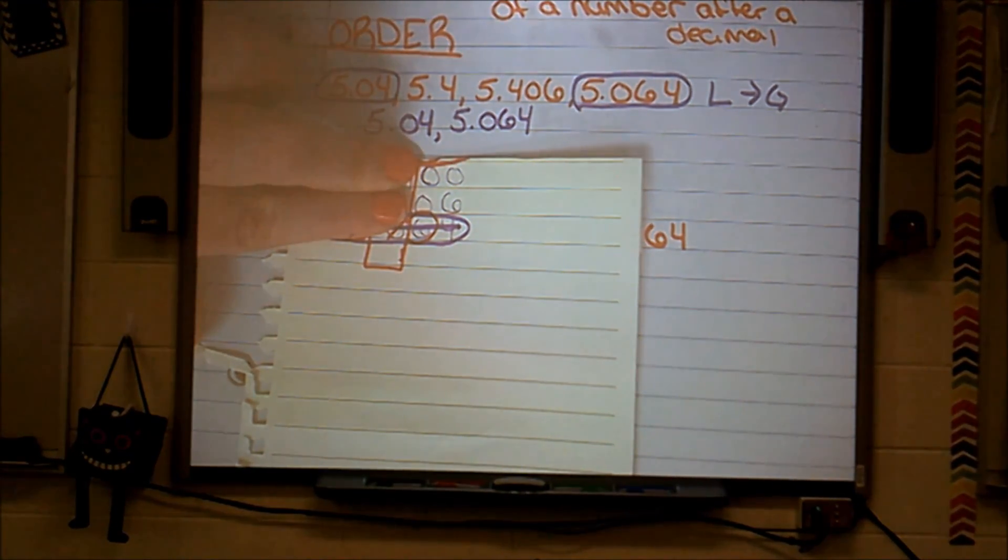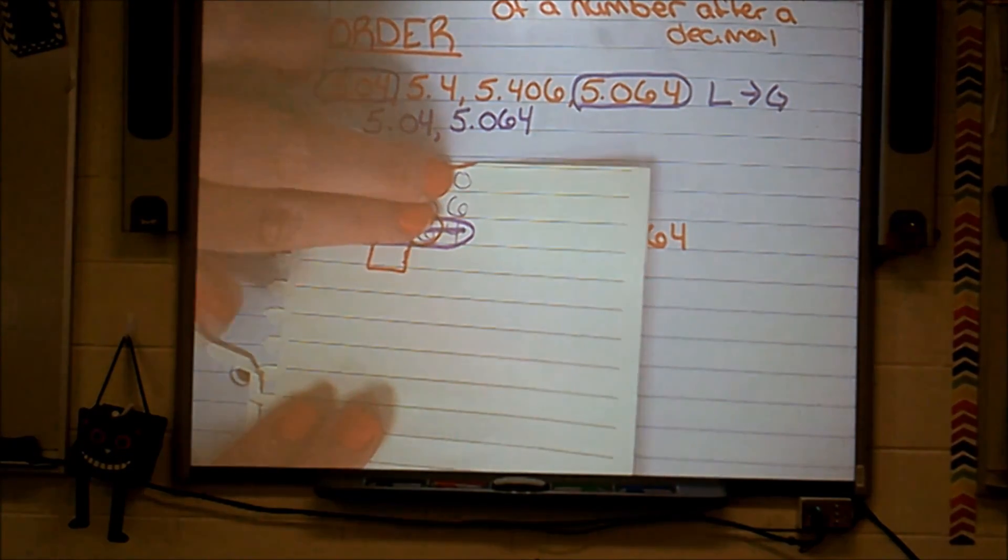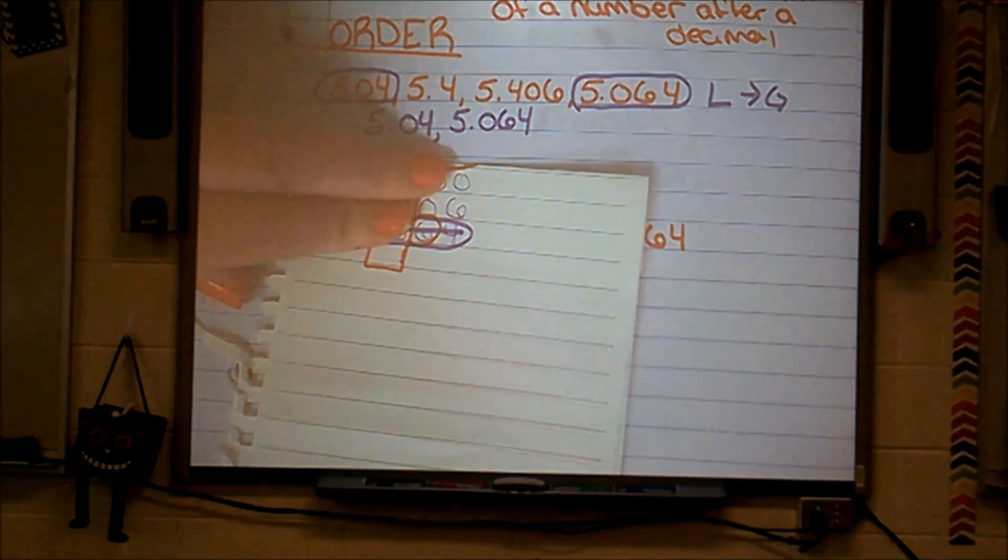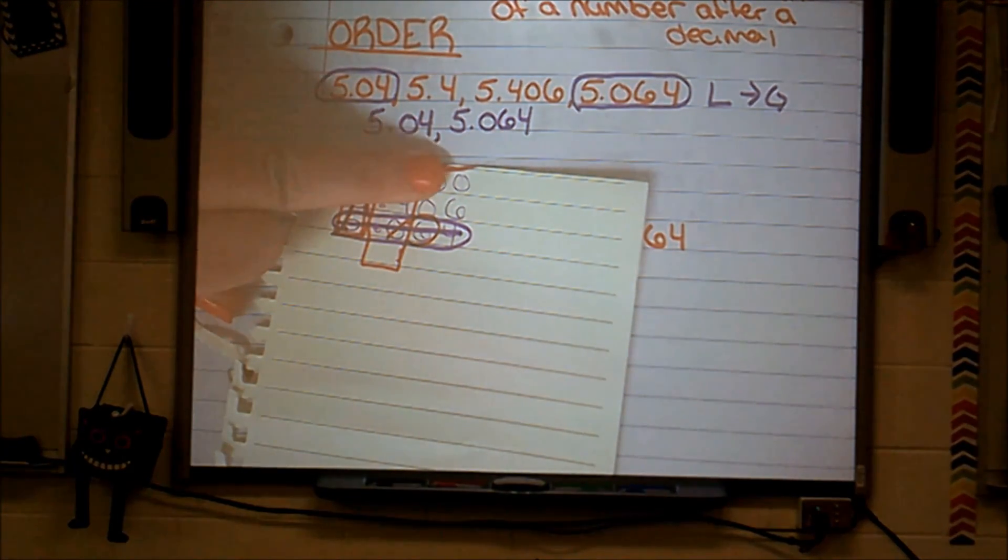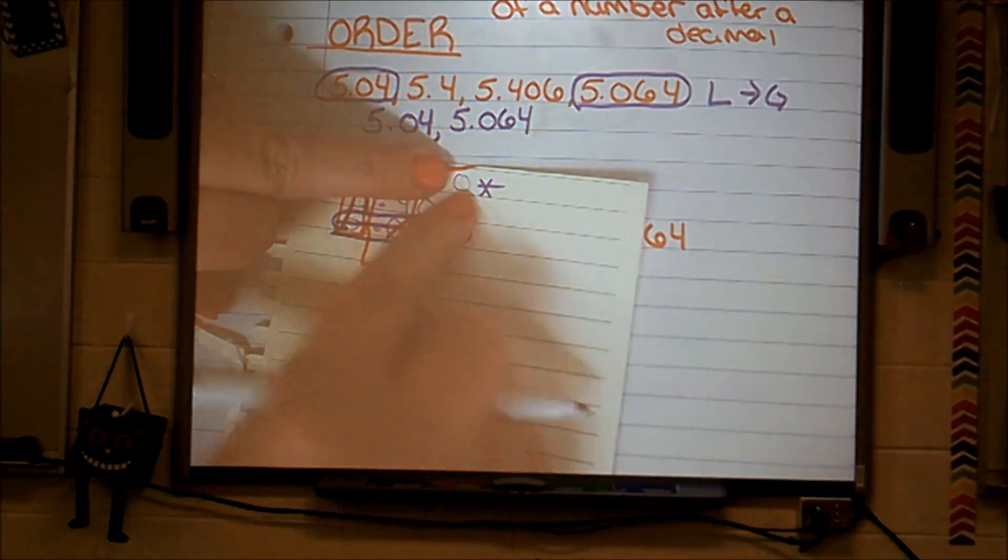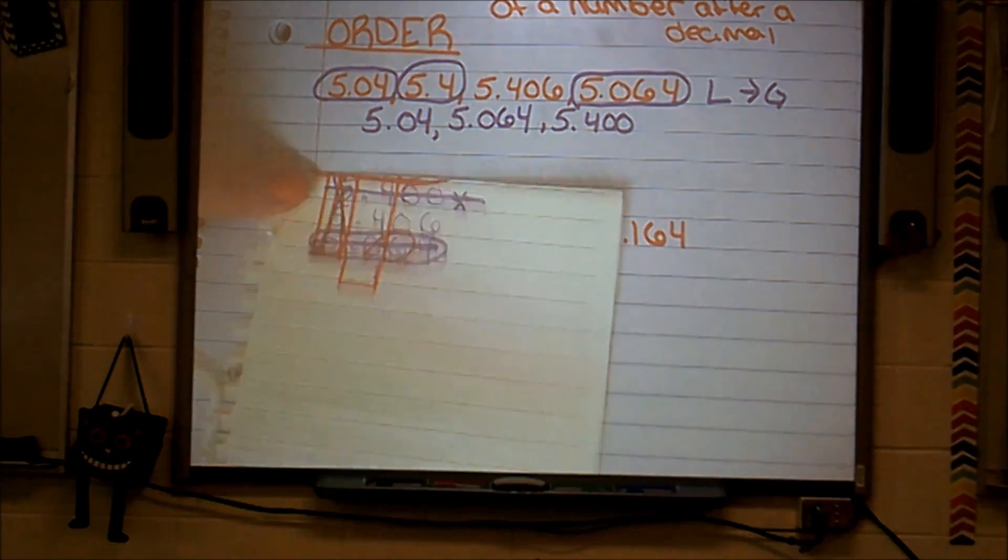Both of the next digits in my next place value in my hundredths place are zeros. Still does not help me. Then I go to my next place value. A zero and a six. Which one is the teeny tiniest number? The zero is the teeny tiniest number.